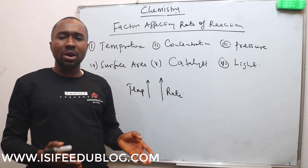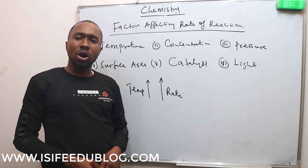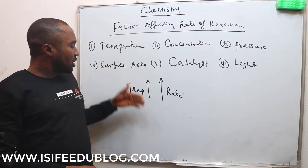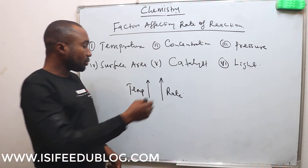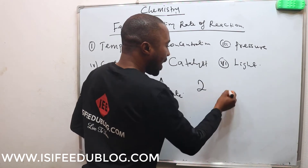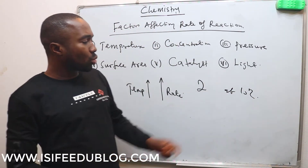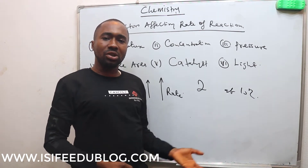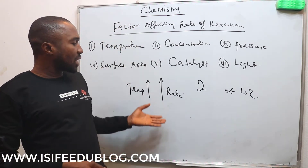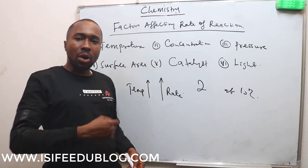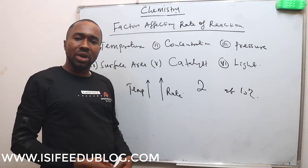It was found experimentally that at every 10-degree rise in temperature, the rate of reaction becomes double. That means if the rate of reaction is 2 at 10 degrees Celsius, once the temperature is increased to 20 degrees Celsius, the rate of reaction becomes doubled. So that was an experimentally determined value — that once you increase the temperature, you are increasing the rate of reaction.